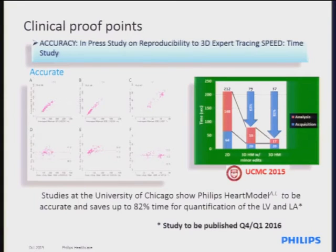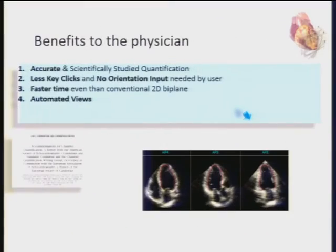We made clinical proof points with Dr. Tseng at the University of Chicago and also with Dr. Ivan Salgo. With this heart model, we were able to clinically prove a reduction in quantification time of about 80% compared to other tools for quantifying the left ventricle and left atrium. The benefits for you include an accurate and scientifically validated quantification tool, fewer clicks and no orientation input needed, speed faster than conventional 2D biplane, and automated apical views and short axis views.